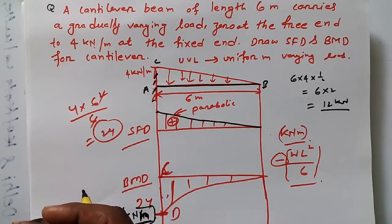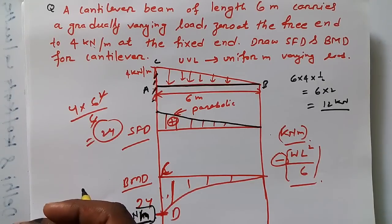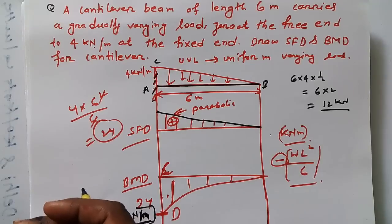So this is how you can draw the shear force and bending moment diagram in the case of uniformly varying load, or gradually varying load. I hope you understood how to draw SFD and BMD for a cantilever beam. If you have any questions, let me know and I will solve them and upload the video to my YouTube channel. Thanks for watching — hope to see you again in my next video. Bye bye.